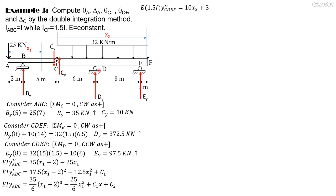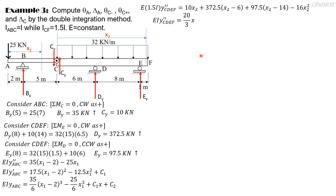For CDEF: 1.5EI y'' of CDEF equals 10·x2 plus 372.5(x2 minus 6) plus 97.5(x2 minus 14) minus 16x2². Dividing everything by 1.5: EI y'' of CDEF equals (20/3)x2 plus (745/3)(x2 minus 6) plus 65(x2 minus 14) minus (32/3)x2².